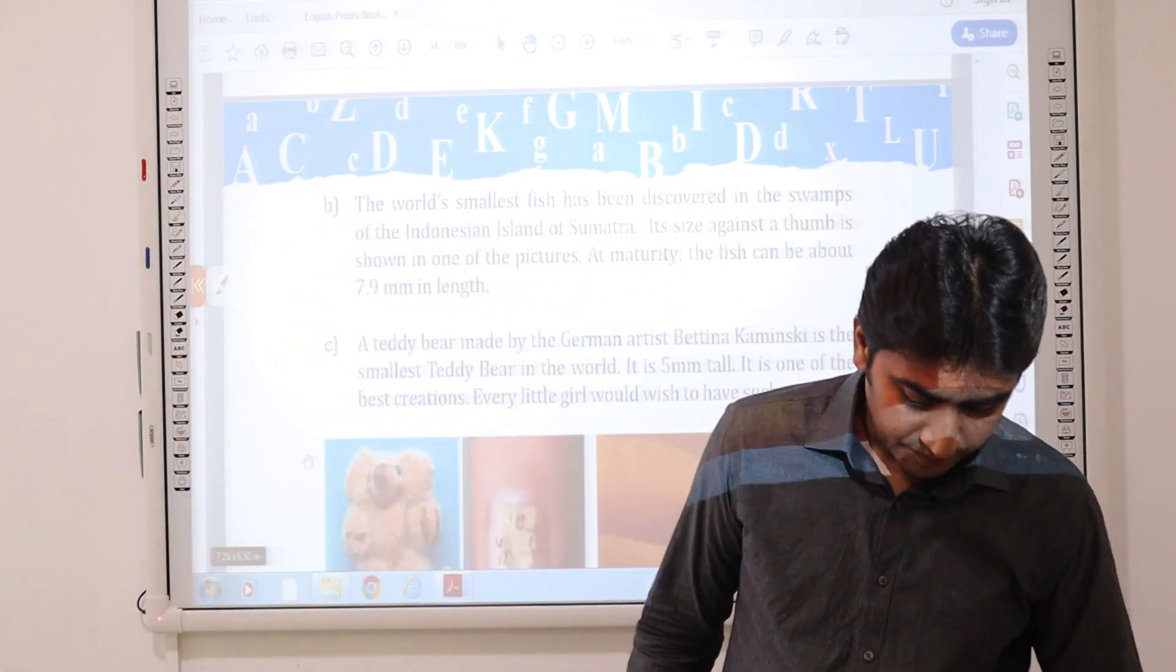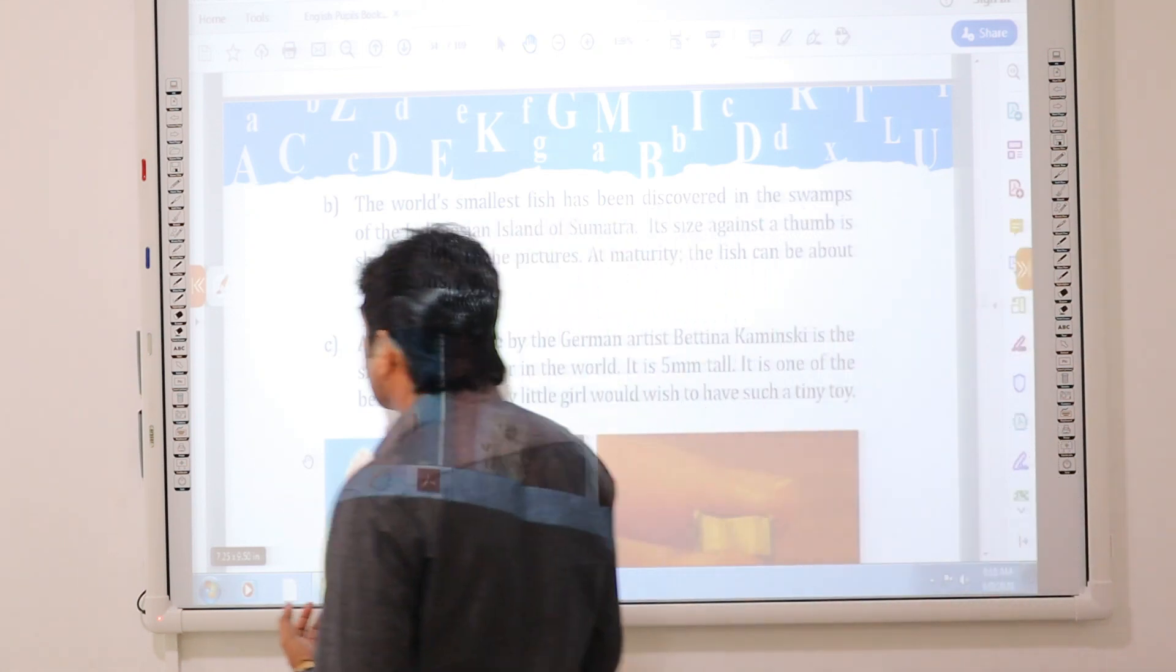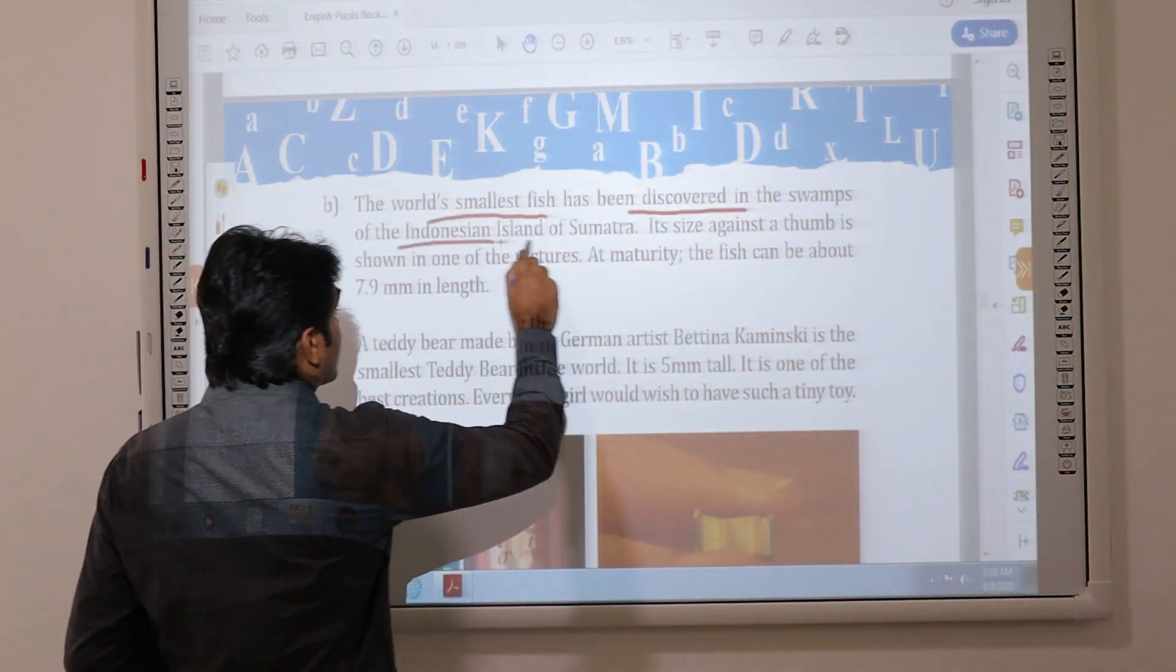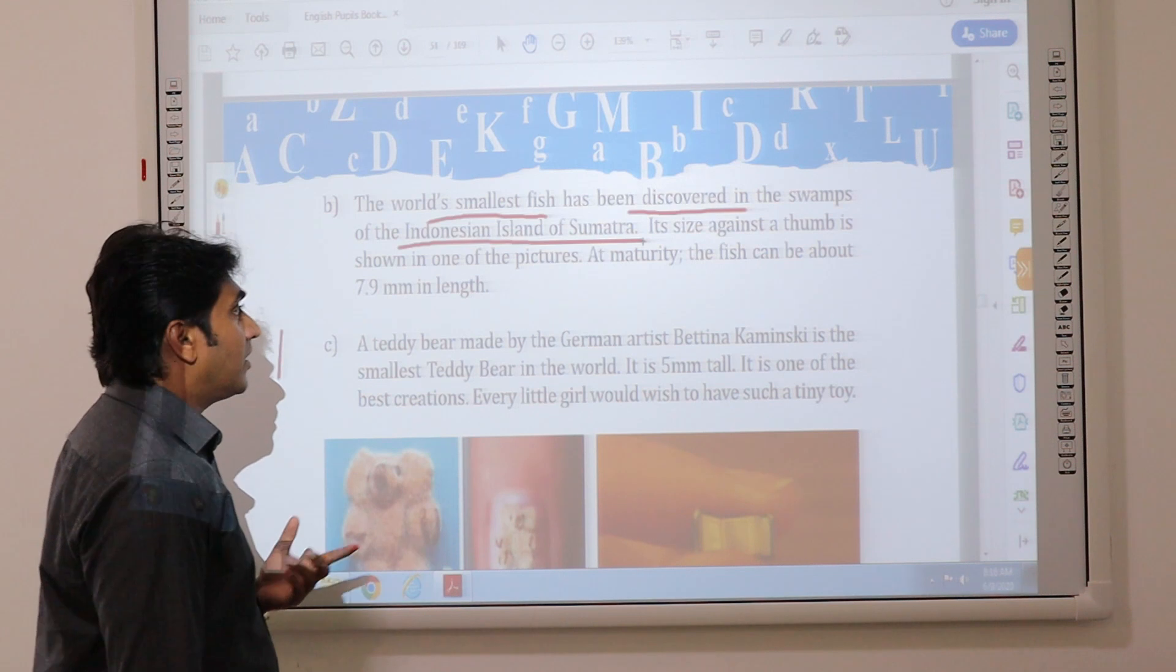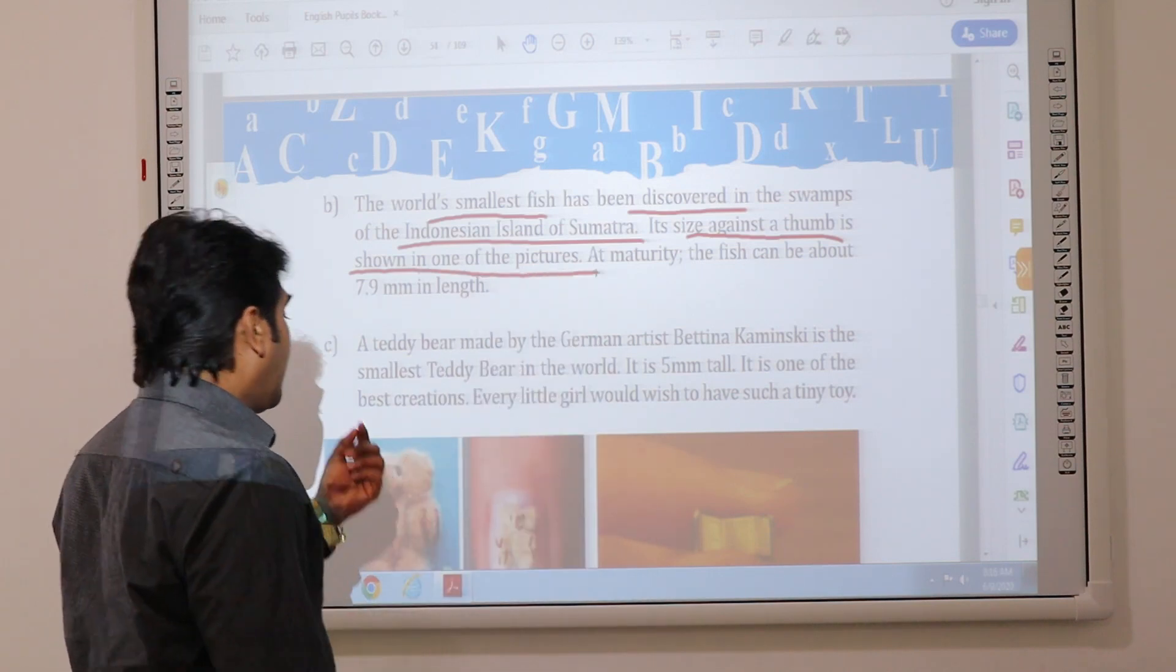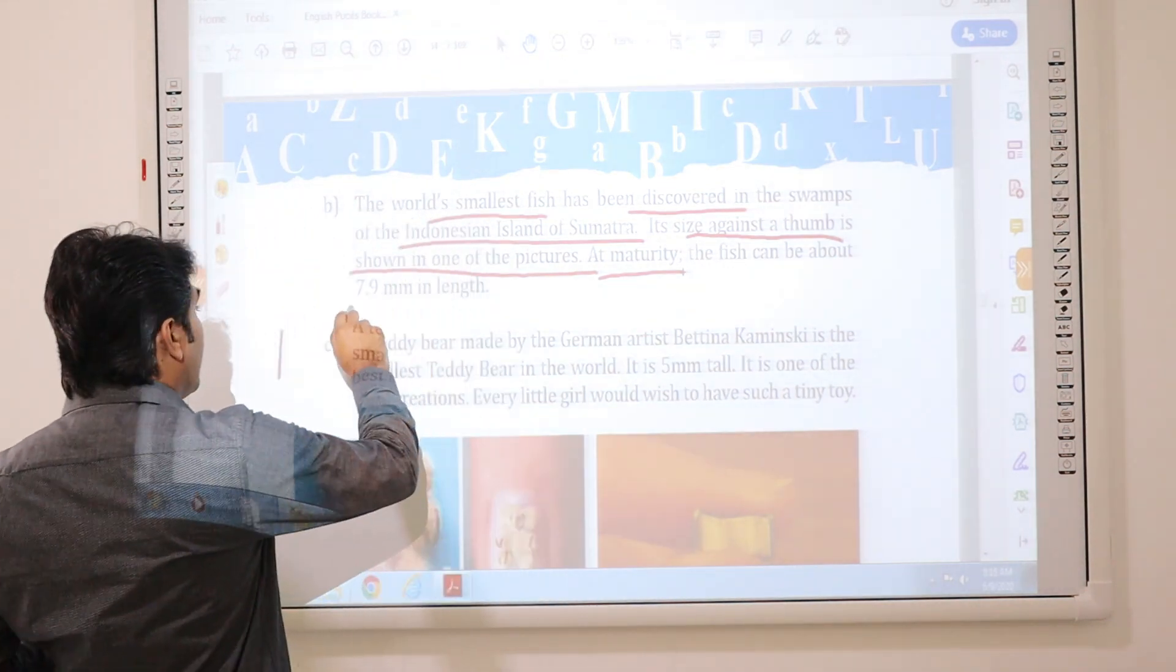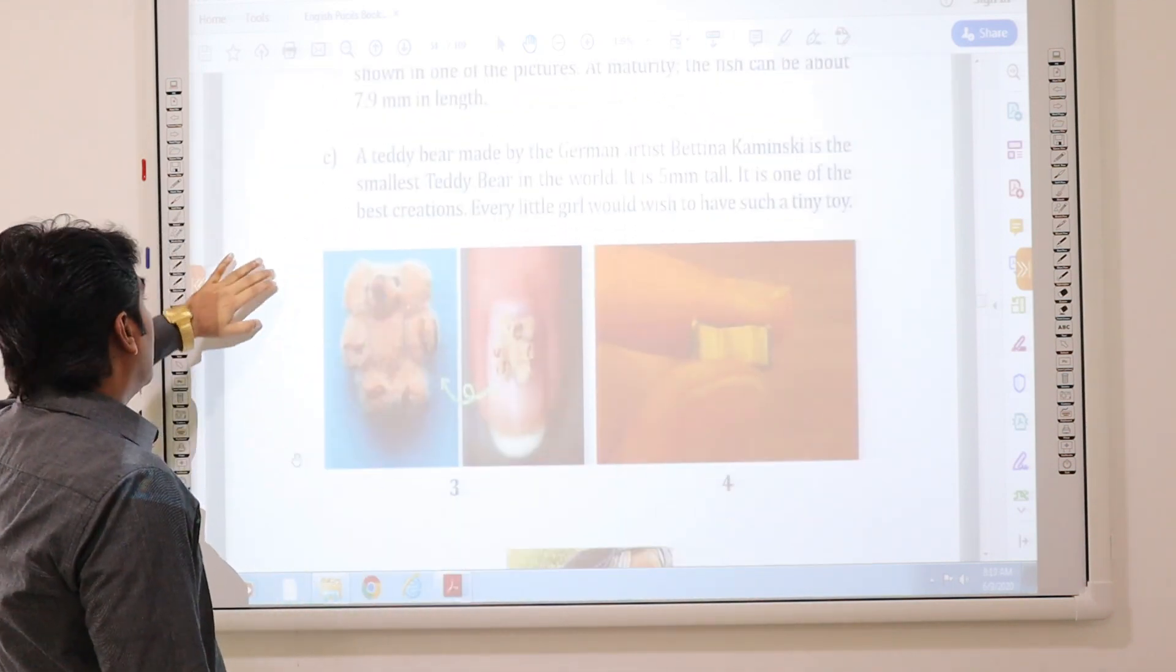The world's smallest fish has been discovered in the swamps of the Indonesian islands of Sumatra. The fish can be about 7.9 millimeters in length.